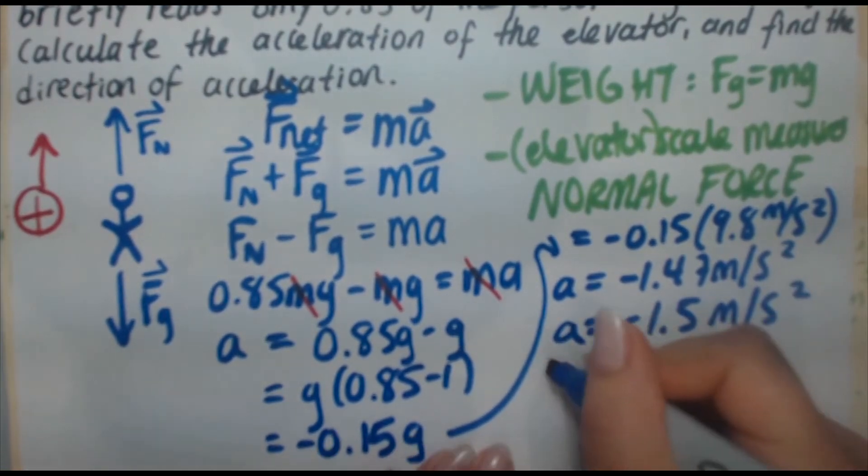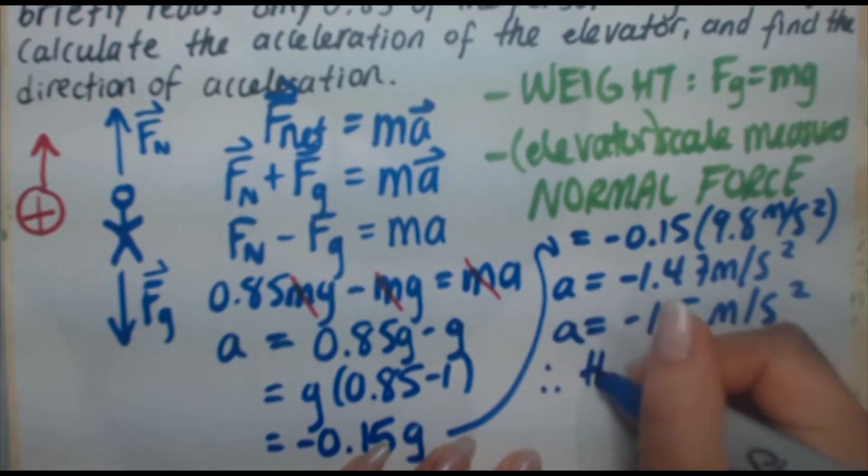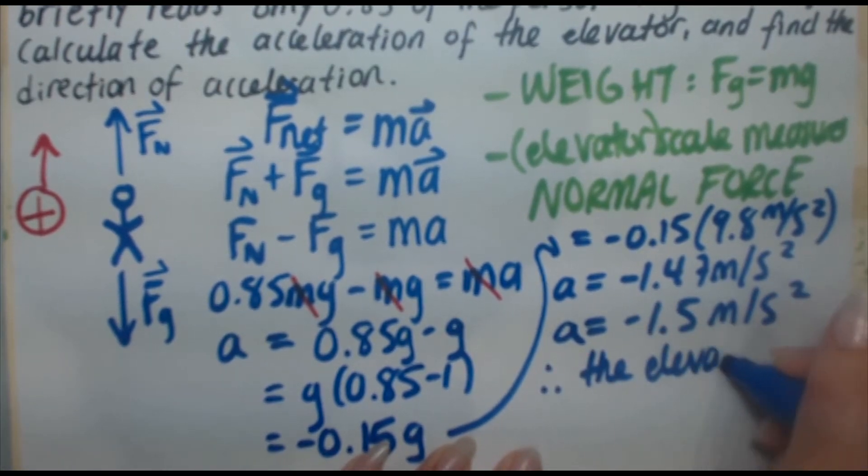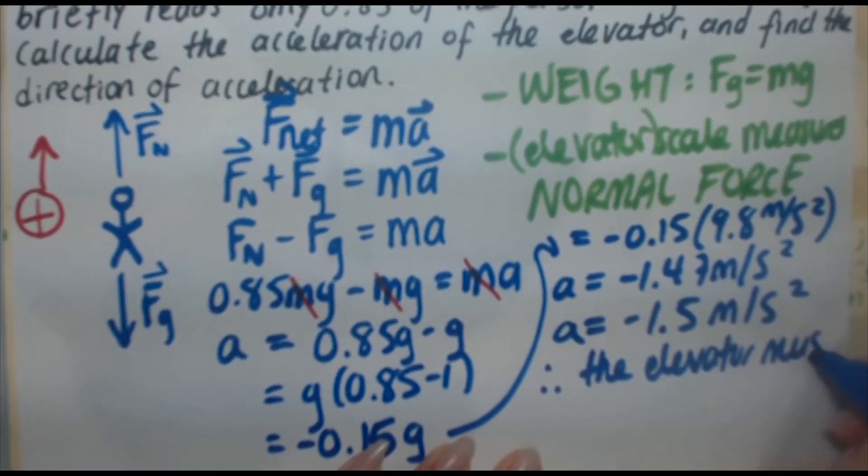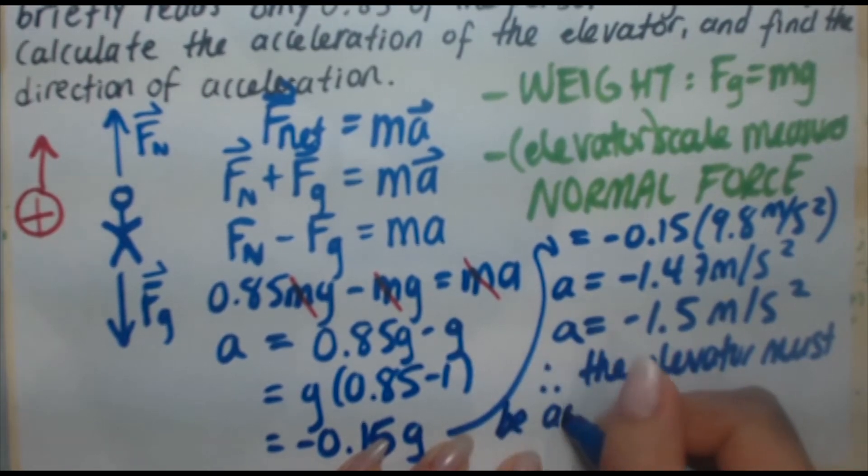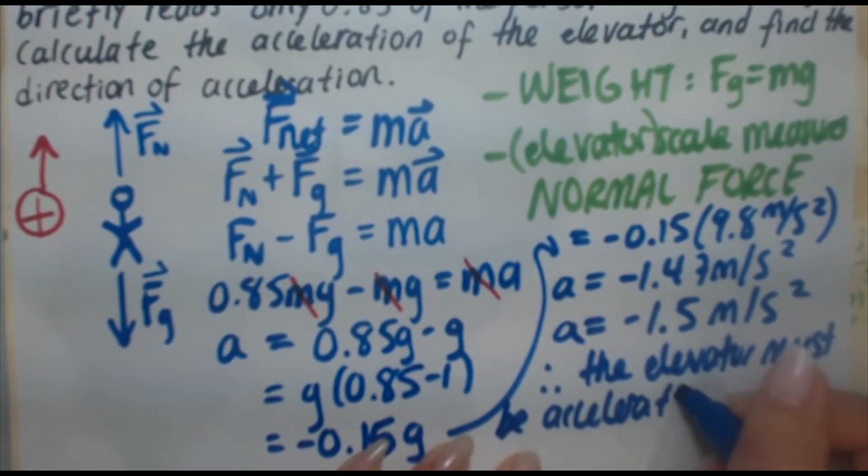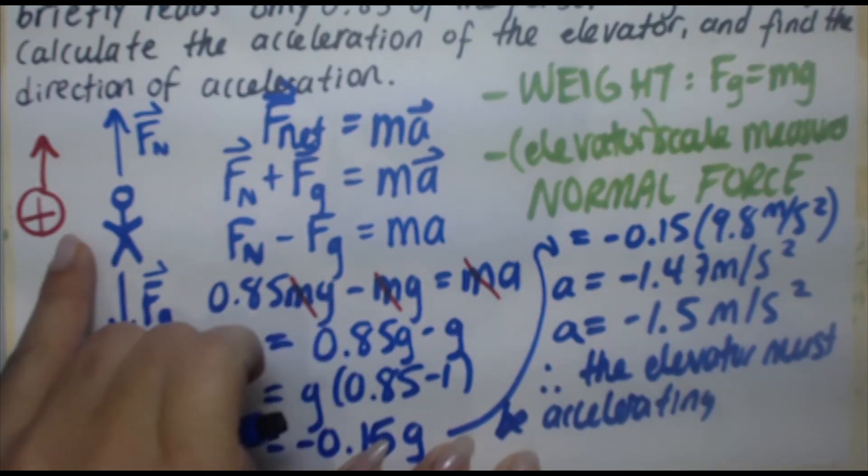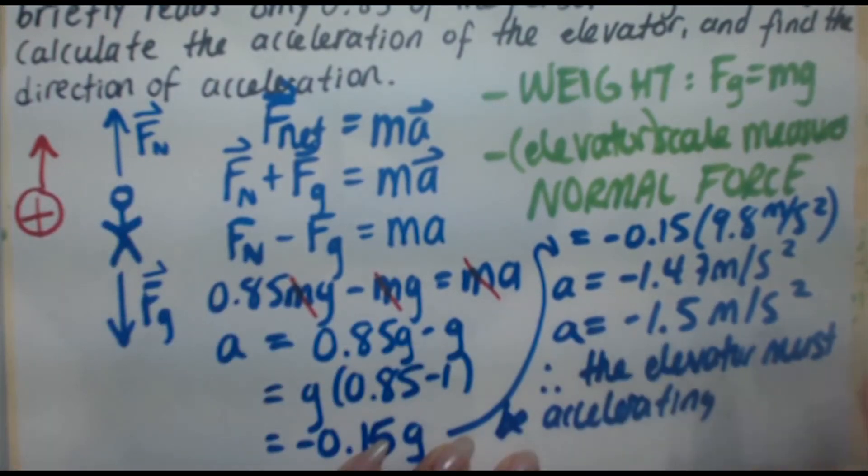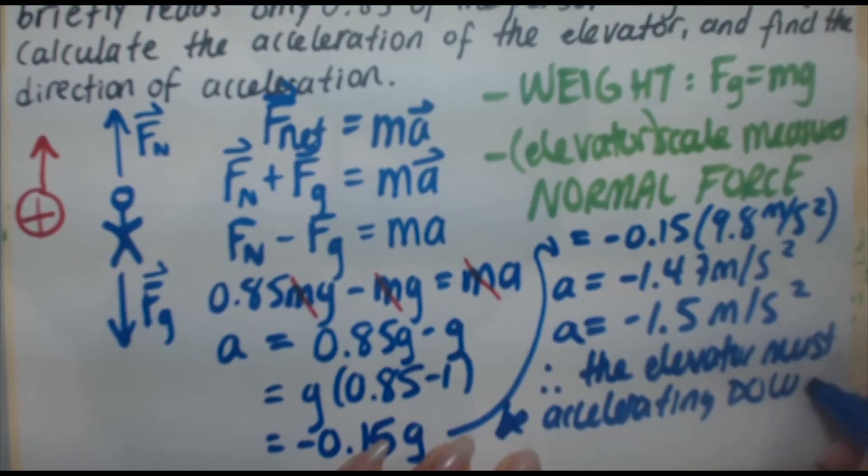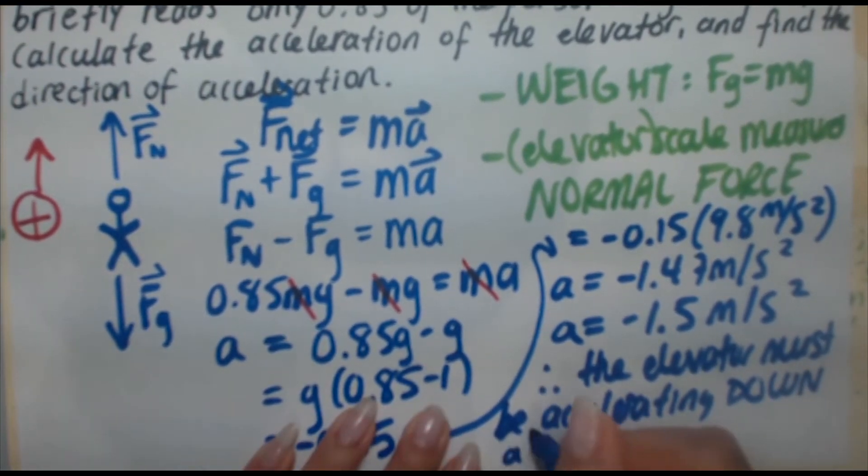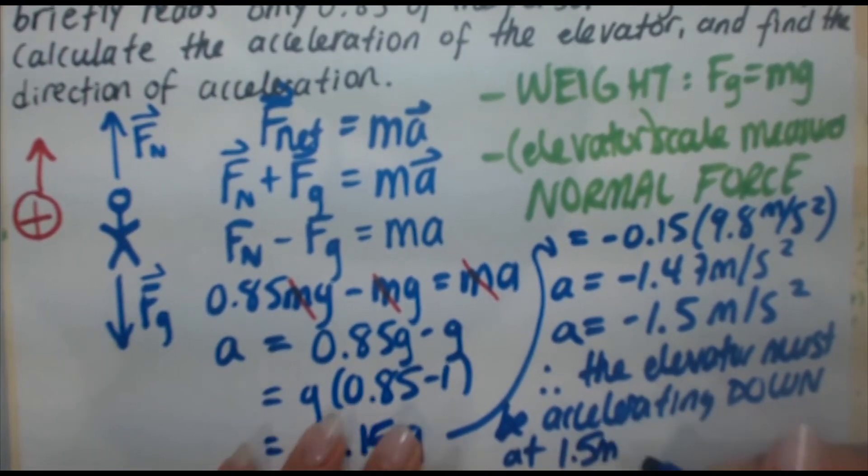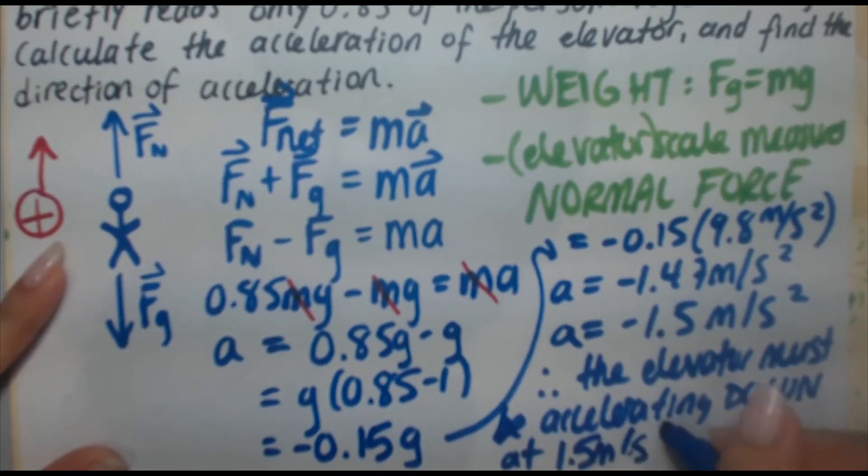Okay. So, that's the final answer. Therefore, the elevator must be accelerating. See the negative? Because positive is defined as up, therefore, the elevator is going down. So, the elevator must be accelerating down at 1.5 meters per second squared.